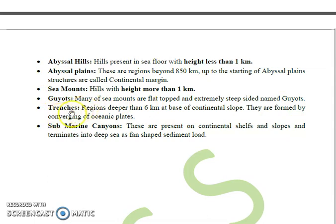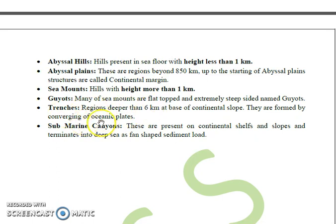Trenches are regions deeper than 6 km. They are found at the base of the continental slope and are formed by the converging of oceanic plates. The deepest place on Earth is the Mariana Trench, which is 11.2 km from the sea surface. Trenches are generally V-shaped, with the convex portion facing towards the water and the concave part towards the base.